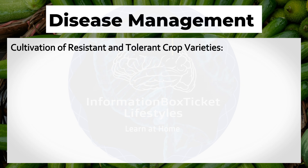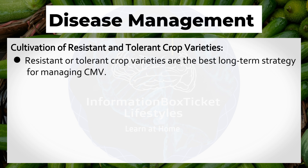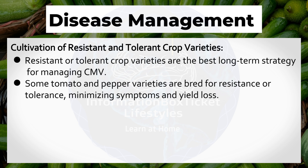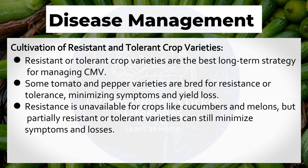Cultivation of Resistant and Tolerant Crop Varieties: Resistant or tolerant crop varieties are the best long-term strategy for managing CMV. Some tomato and pepper varieties are bred for resistance or tolerance, minimizing symptoms and yield loss. Resistance is unavailable for crops like cucumbers and melons, but partially resistant or tolerant varieties can still minimize symptoms and losses.